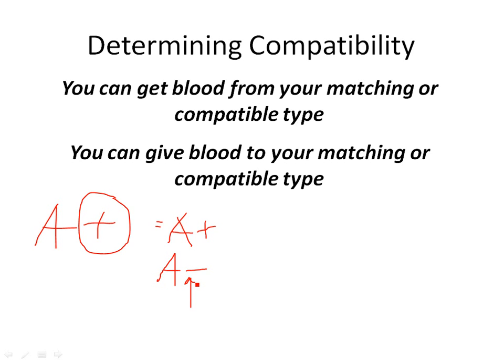My body doesn't attack A negative blood because it says A matches, and no RH — that's okay, I already own RH. So you can always give negative to a positive person. It does not go the other way around. If someone were A negative, we could give them A negative — the match — but they do not have RH antigen. So if you give them the antigen in A positive blood, their bodies will consider it foreign, say that RH does not belong in me, and attack it. When determining blood type compatibilities, you're looking at antigens specifically to see if they match or are at least compatible.